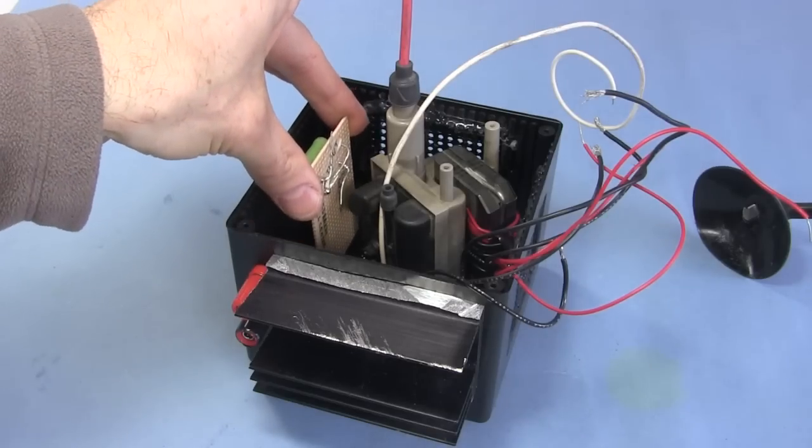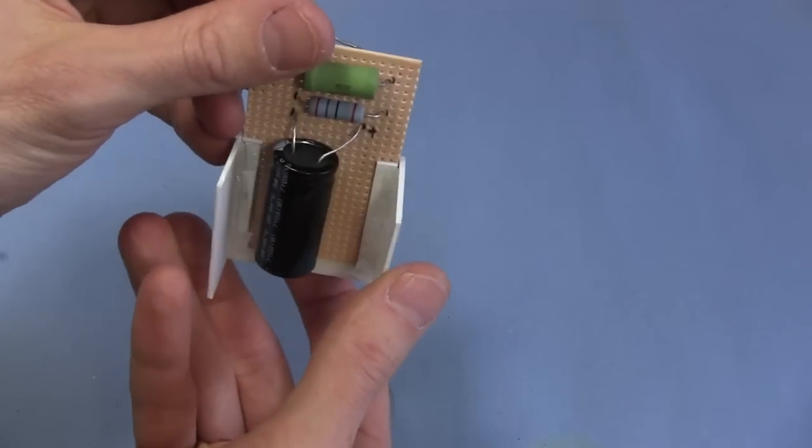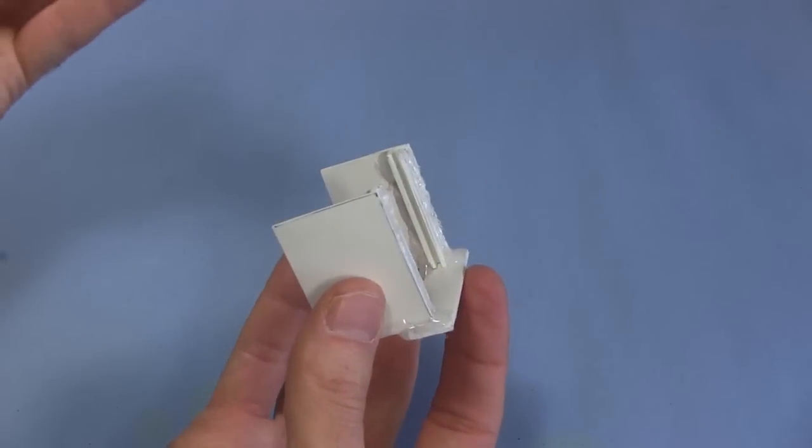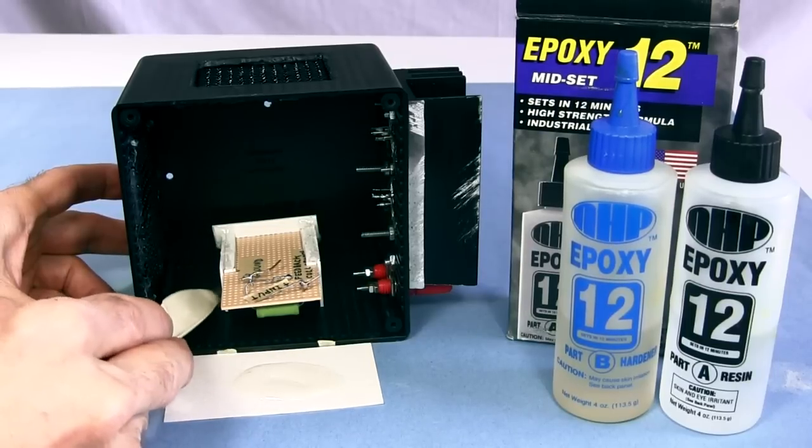I wanted this board to go in around here, so I cut up some plastic and made a holder that the circuit board could slide in and out of. I couldn't fit the glue gun into tight space, so I epoxied it in instead.